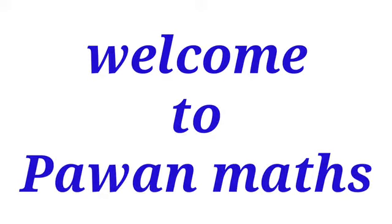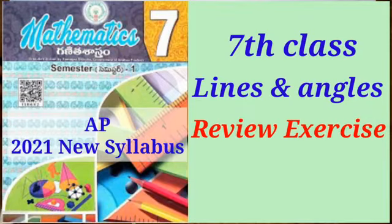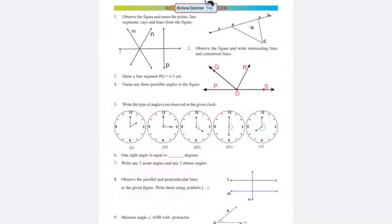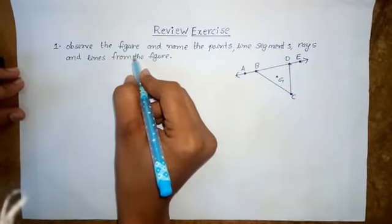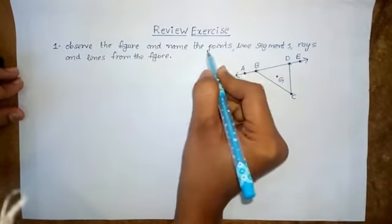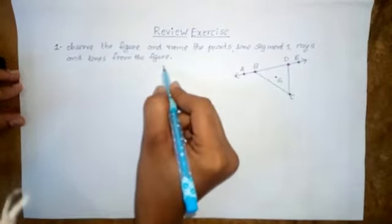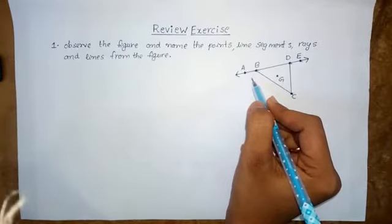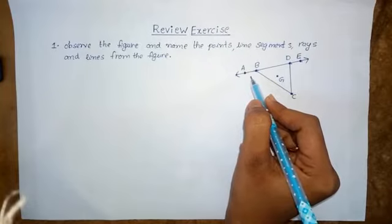Hi students, welcome to my channel. I am going to explain the seventh class fourth chapter review exercise first problem. Observe the figure and name the points, line segments, rays and lines from the figure. From this given figure we need to identify the points, line segments, rays and lines.